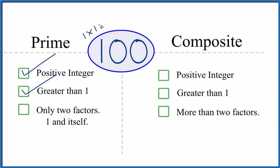We know 1 times 100 equals 100. So we have two factors. But are there any other factors that go into 100?